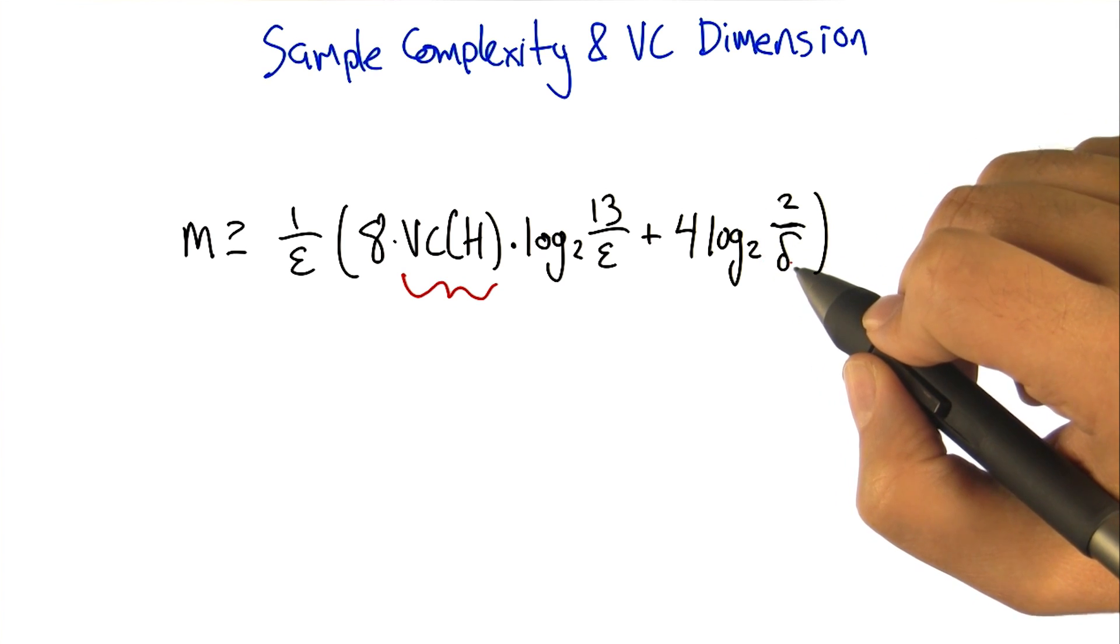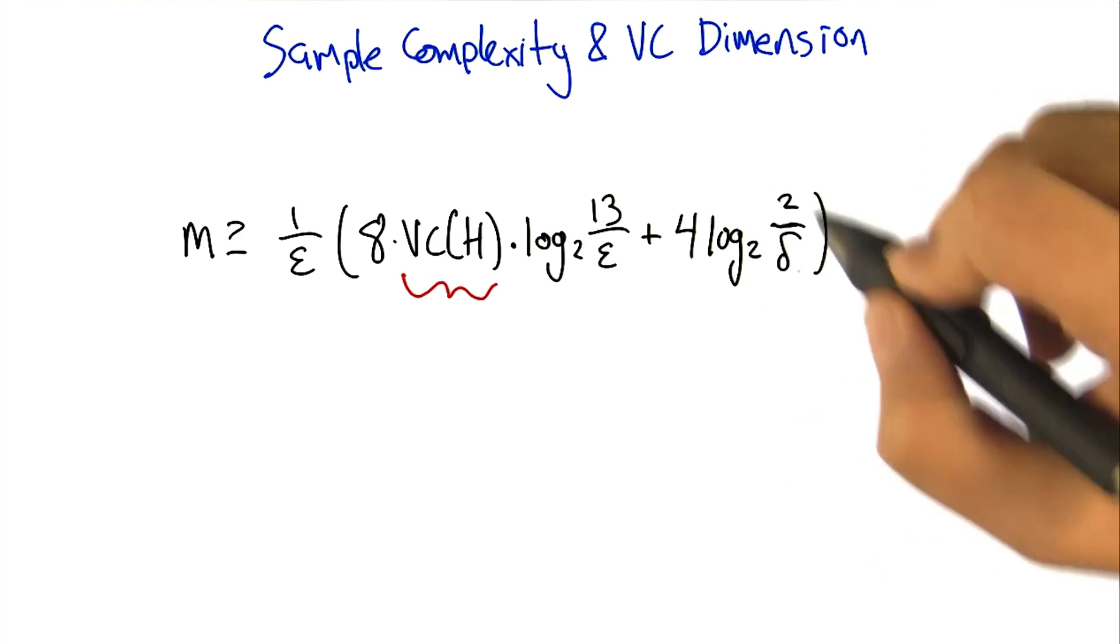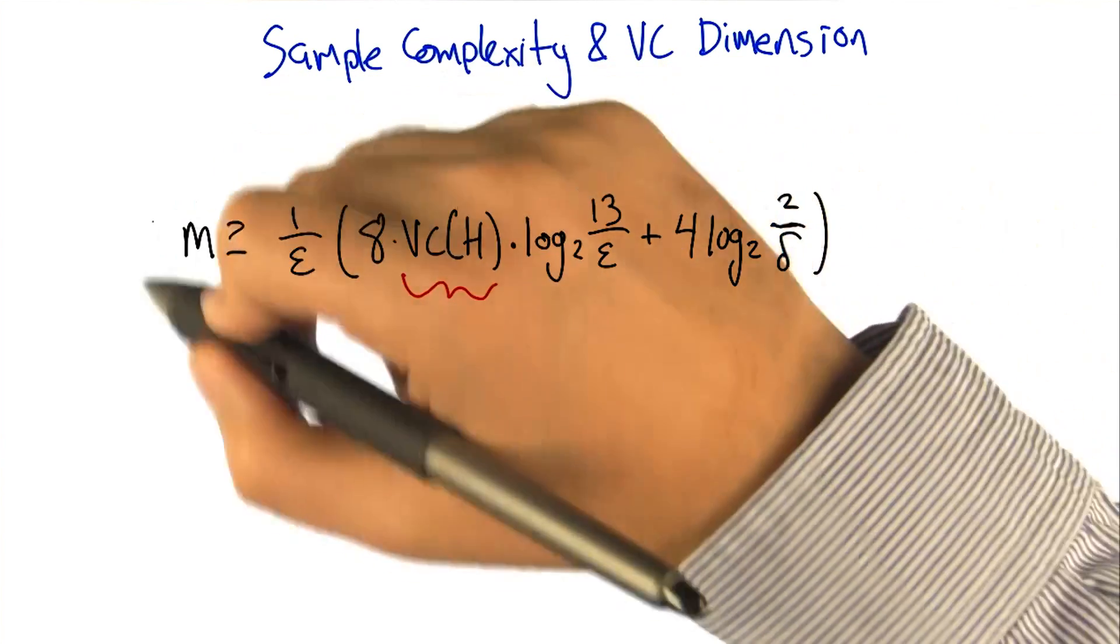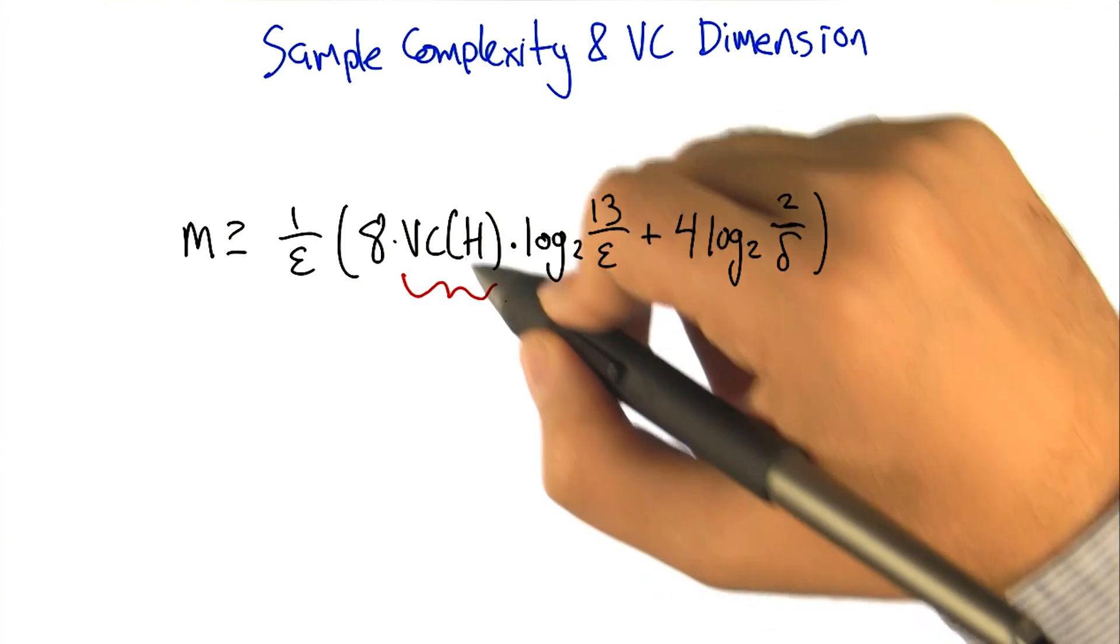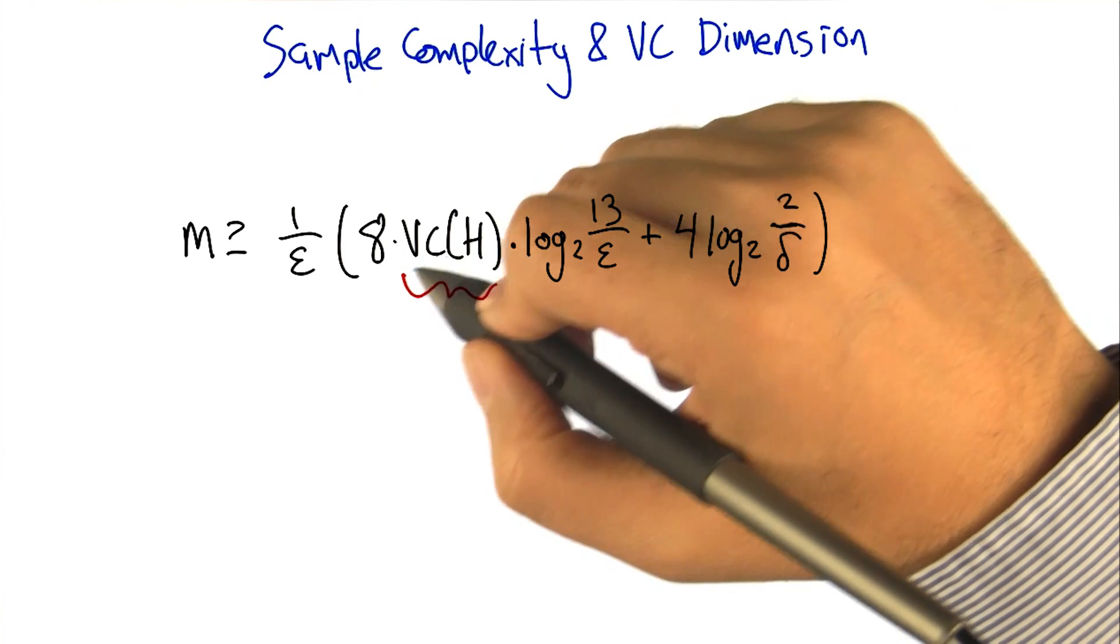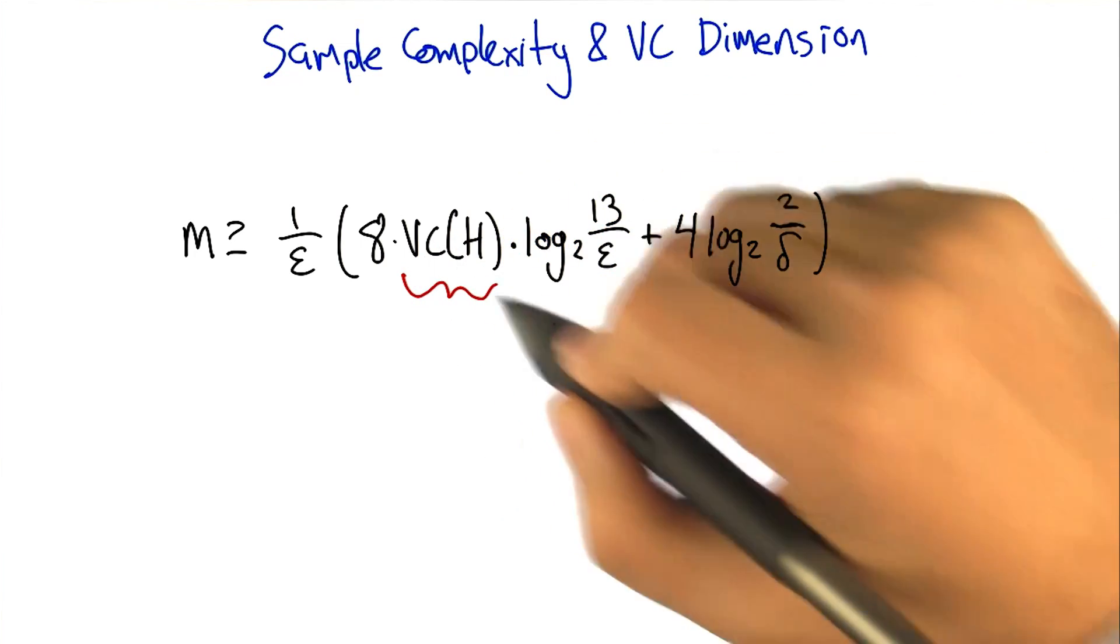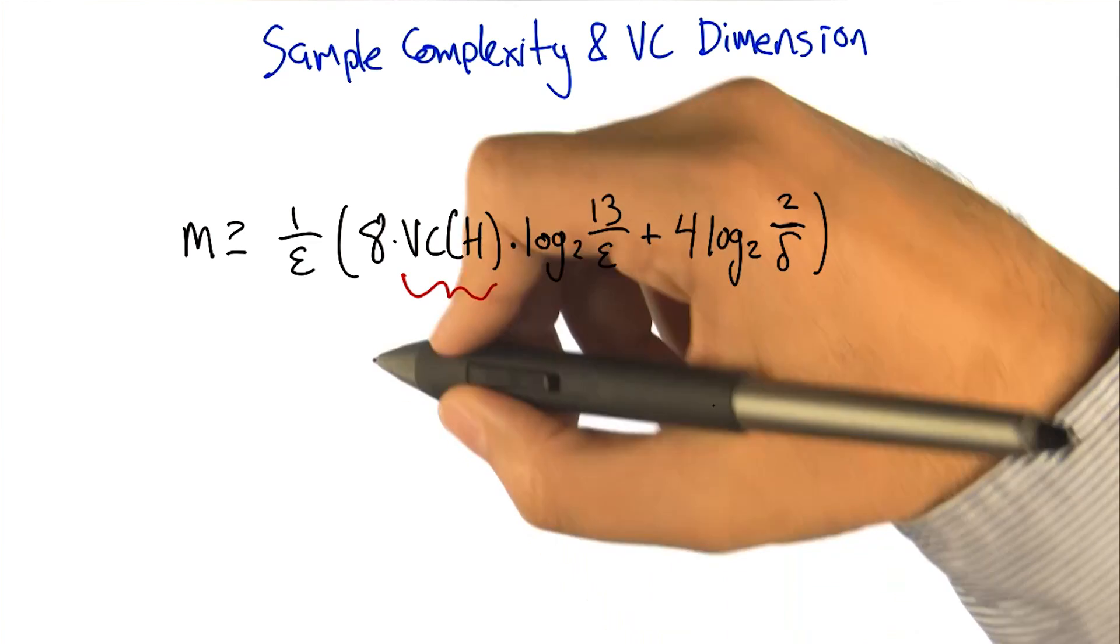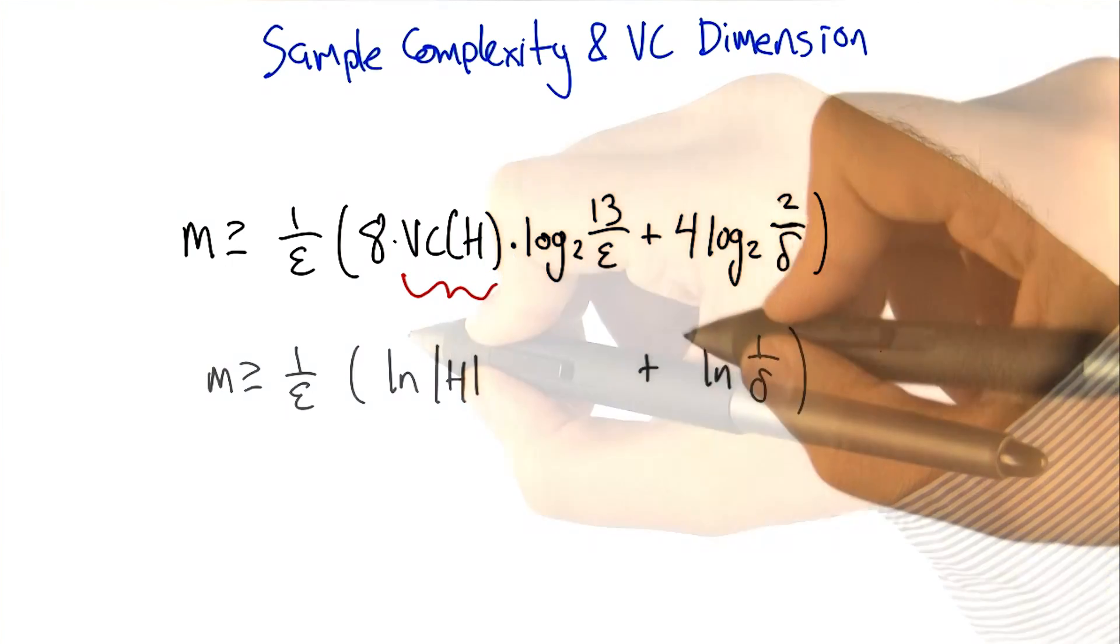And again, as delta gets small, the failure probability gets small, this quantity gets bigger, and the size of the sample needs to be bigger. But this is the cool thing, that the VC dimension is coming in here in this nice, fairly linear way. So it sort of plays the same role as the natural log of the size of the hypothesis space.